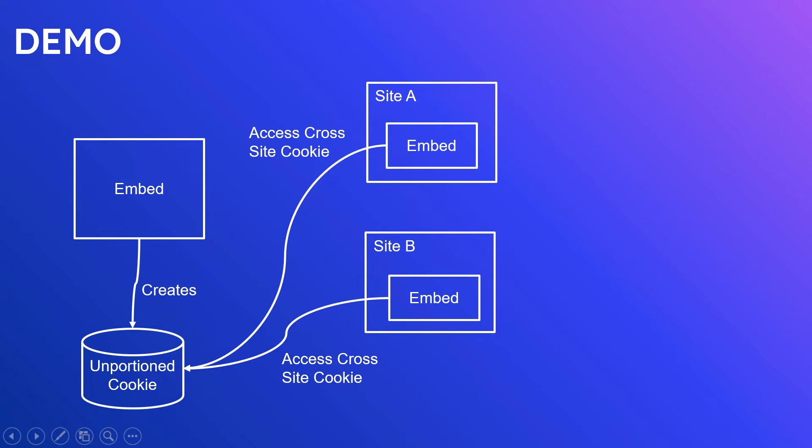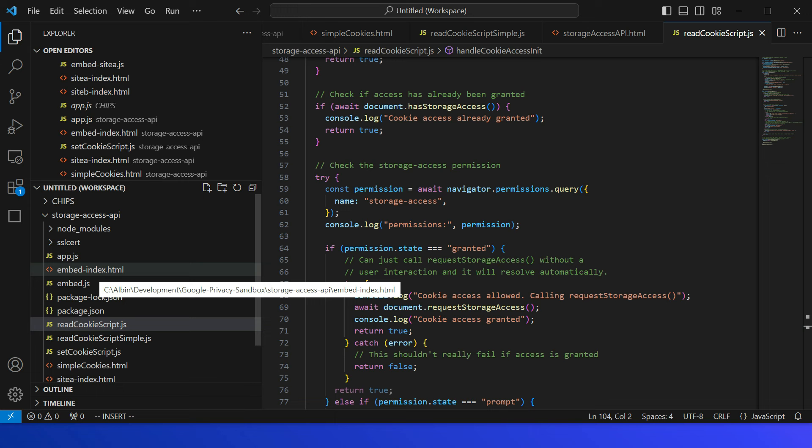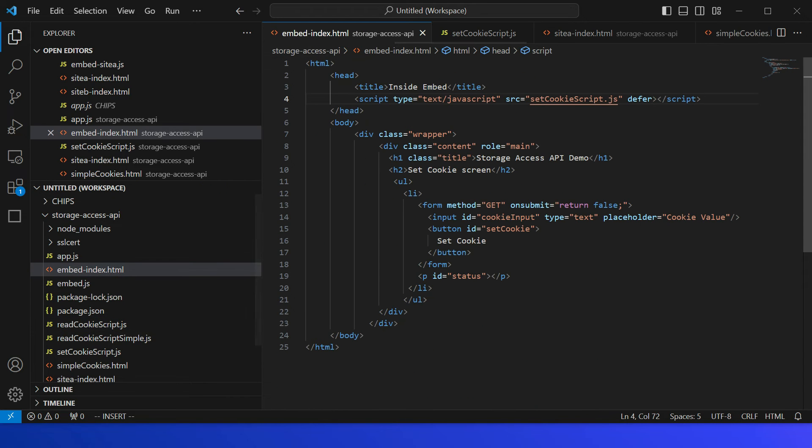Let us quickly see a demo. In this diagram I have an embedded website that creates an unpartitioned cookie, and I have Site A and Site B — both sites are embedding the same website. Both are trying to access the same unpartitioned cookie created by that embed. Based on the new Privacy Sandbox and privacy standards, if third-party cookie access is disabled, the embed will not be able to access that unpartitioned cookie. The Storage Access API helps address this.